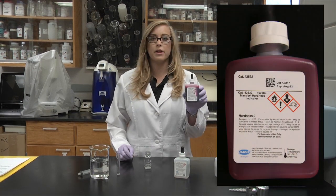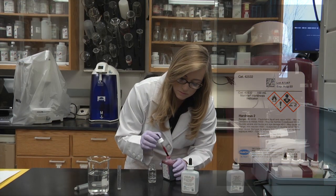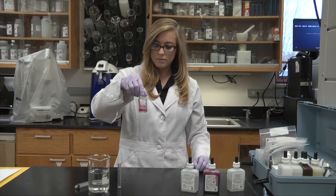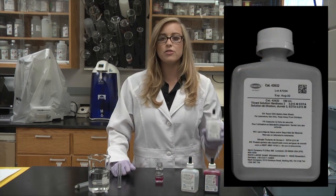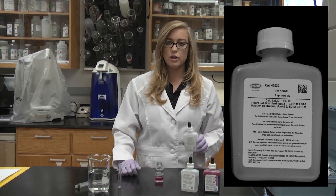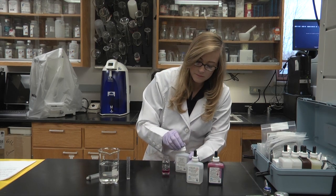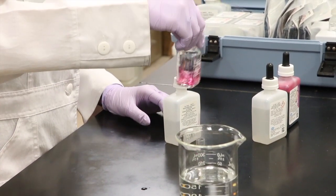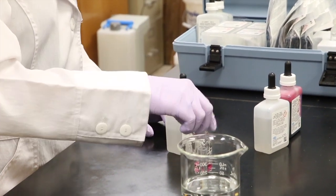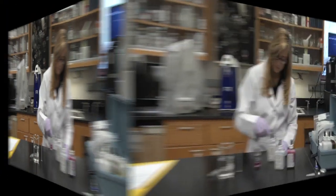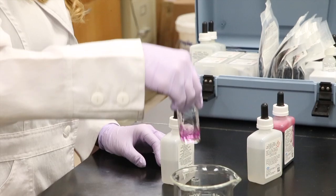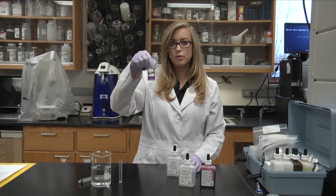We will now add one drop of the Mander hardness solution tube, and then swirl to mix. Now we add the titrant reagent, hardness three, and we'll count this drop by drop until we get a color change. And that was 16 drops. It changed from pink to blue. And then to get your hardness in milligrams per liter, you would multiply that by 17.1.